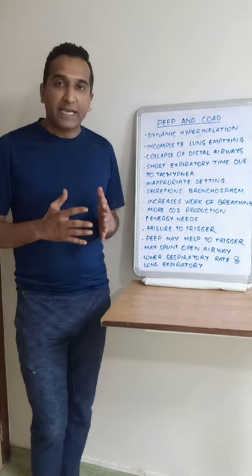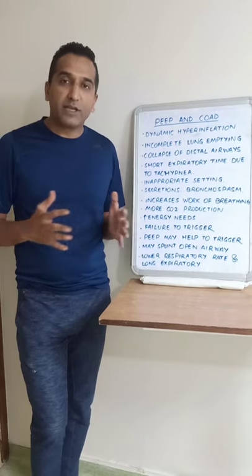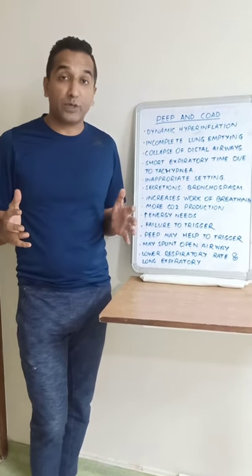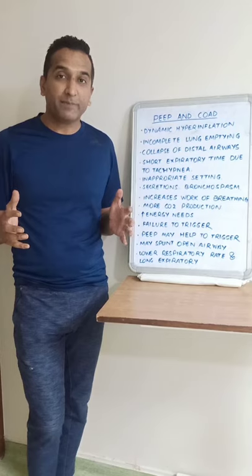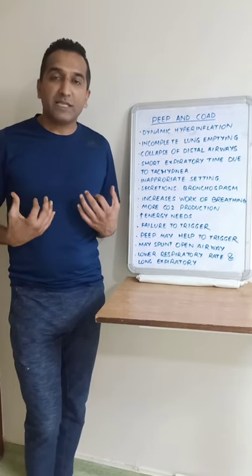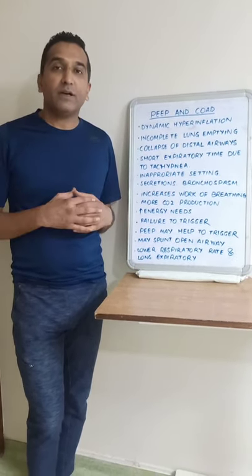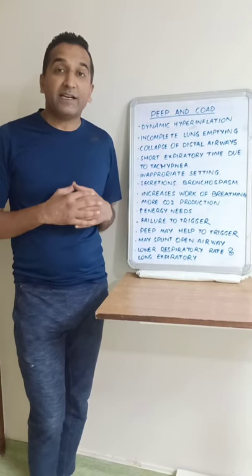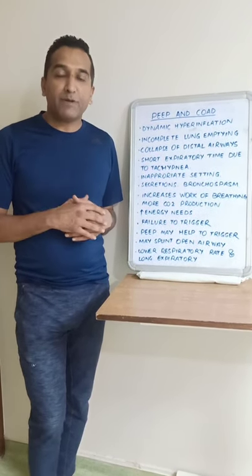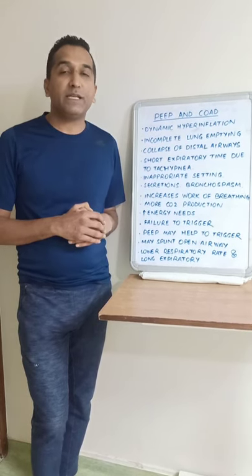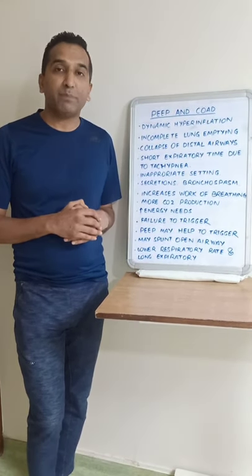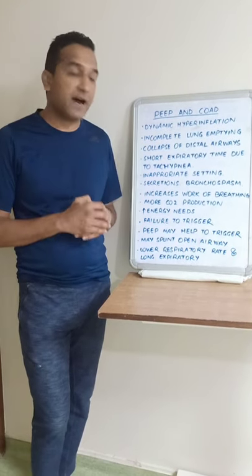Dynamic hyperinflation increases the overall volume of air in the lung very near to total capacity, flattens the diaphragm, and puts the muscles of breathing at a disadvantage. The work of breathing increases significantly and patients can fatigue very fast.